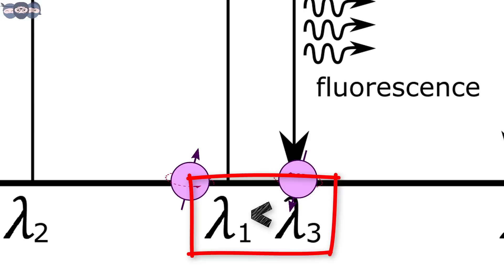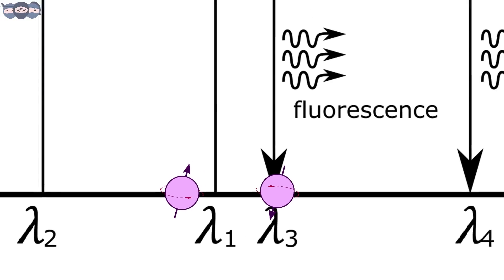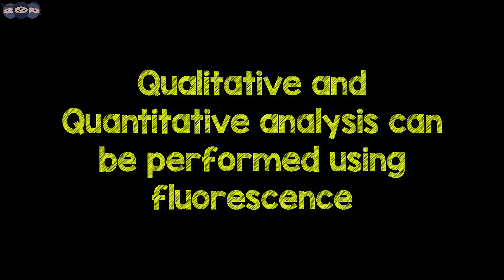That is, lambda 3 is greater than lambda 1. One can perform both qualitative and quantitative analysis of a sample by studying and measuring its fluorescence.